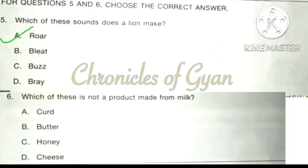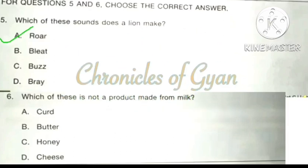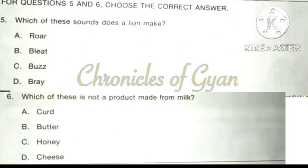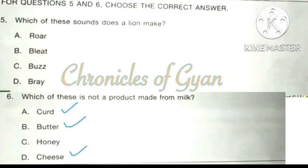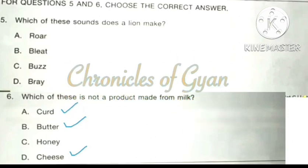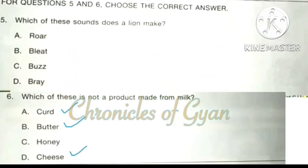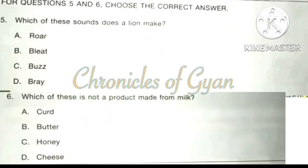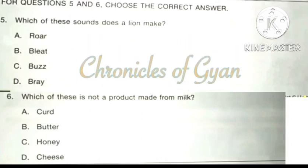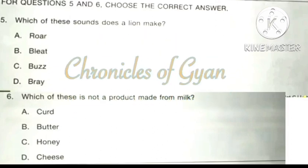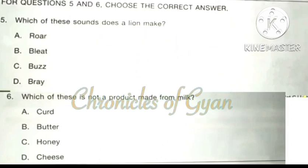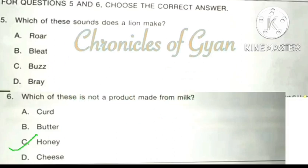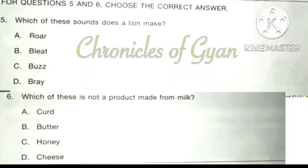Question 6: Which of these is not a product made from milk? Option A — curd is made from milk. Option B — butter is also made from milk. Option D — cheese is also made from milk. So the correct answer is option C: Honey. Honey is not made from milk; it is obtained from bees.